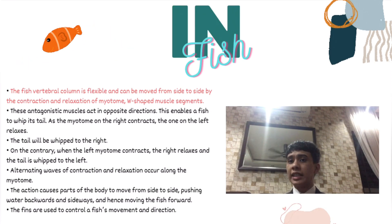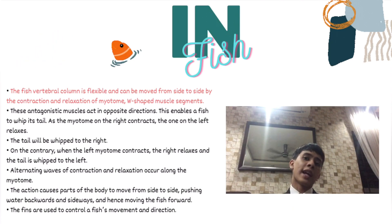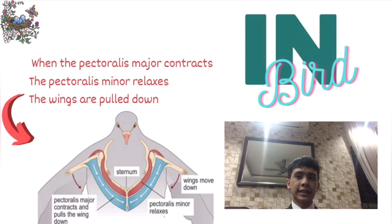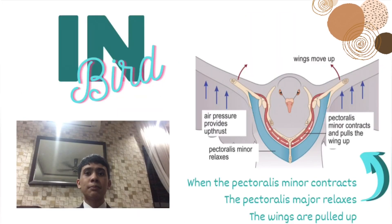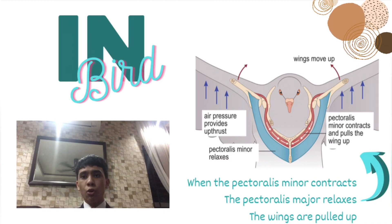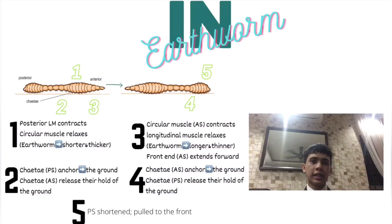The fins are used to control a fish's movement and direction. Next is the flying movement in birds. When the pectoralis major contracts, the pectoralis minor relaxes and the wings are pulled down. When the pectoralis minor contracts, the pectoralis major relaxes and the wings are pulled up, taking advantage of air pressure to keep them flying.